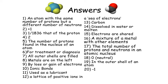Number seven: all outer shells are filled. Number eight: metals are on the left. Number nine: by the loss or gain of electrons. Number ten: ionic bonds. Number eleven: used as a lubricant.